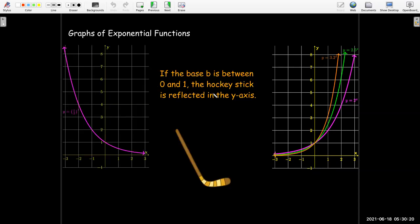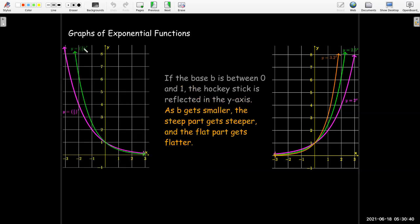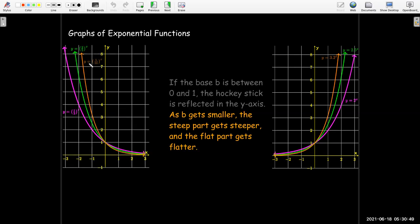If you have a base between 0 and 1, it still has the hockey stick shape. It's just the handle is now pointing off to the left rather than to the right. If I take a base which is smaller, so I go from 0.5 to 0.4, then you can see that I get the steep part getting steeper and the flat part getting flatter. If I chose an even smaller base, which is still positive, I still get a steeper part where the graph is steep and a flatter part where the graph is flat.